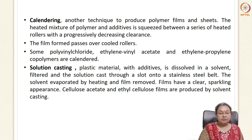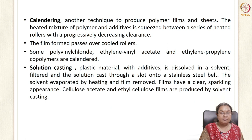Calendering is another technique to produce polymer films and sheets. The heated polymer and additives are squeezed between a series of heated rollers with progressively decreasing clearance. This is a unique process with a lot of series of rollers placed to squeeze the film and reduce its thickness. The films passed through calendering are then passed over cooled rollers to cool them. Some copolymers that are calendared include polyvinyl chloride, ethylene vinyl acetate, and ethylene propylene co-polymers.